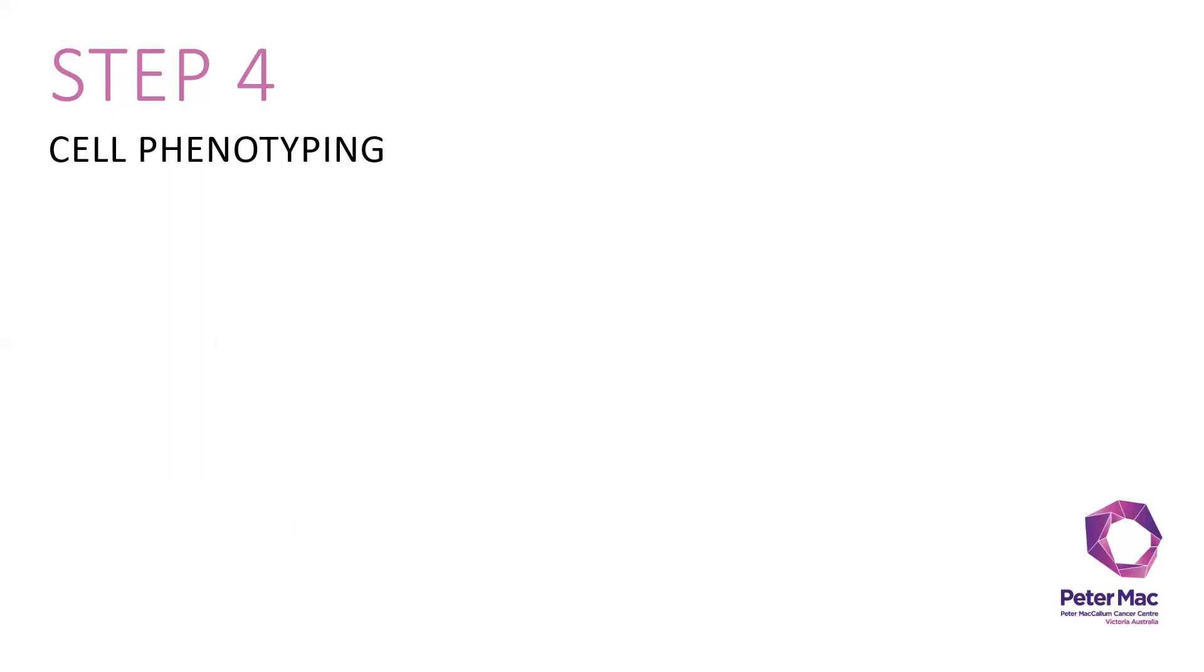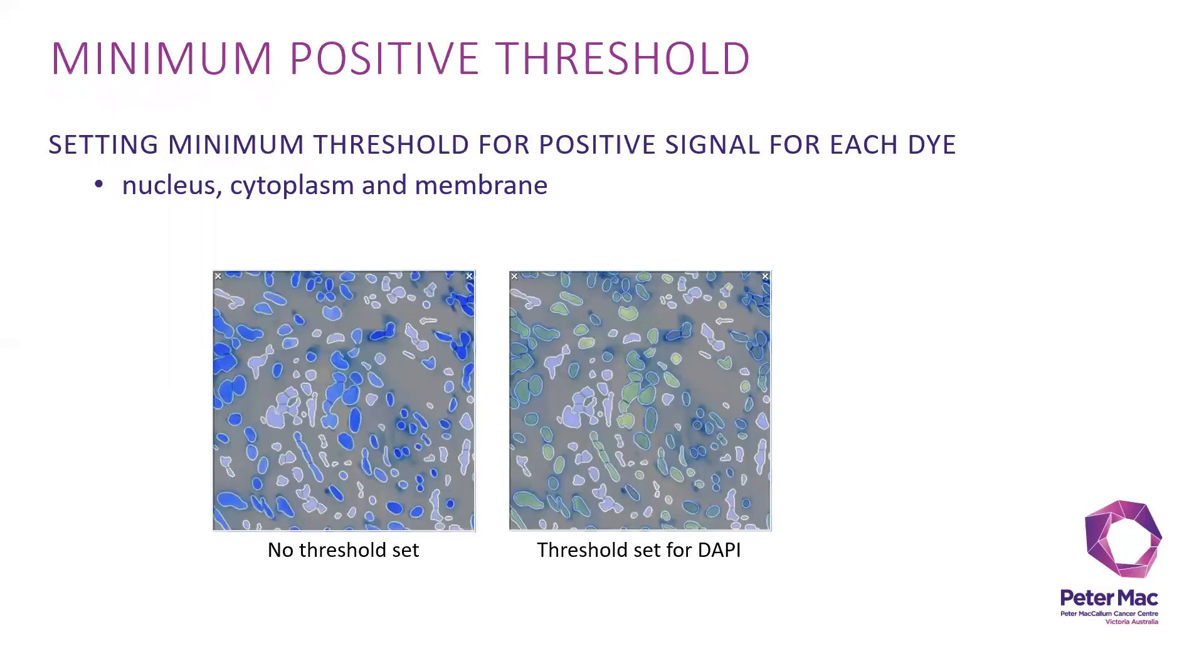After you're happy with the cell segmentation, you can move on to cell phenotyping. First, you have to set minimum threshold for positive signals for each dye, depending on each marker.